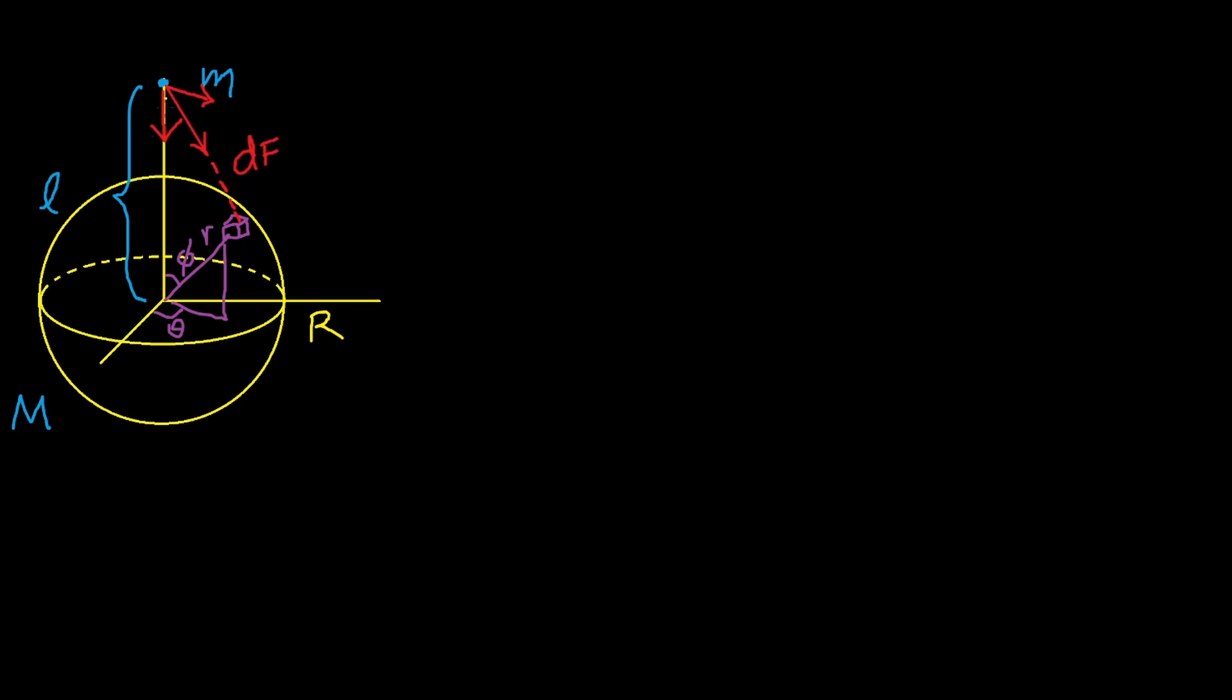dF can then be decomposed into two orthogonal components as shown, with the radial components pointing towards the center of big M. This is the only component we need to consider, because the normal component would cancel in the integration due to axial symmetry.